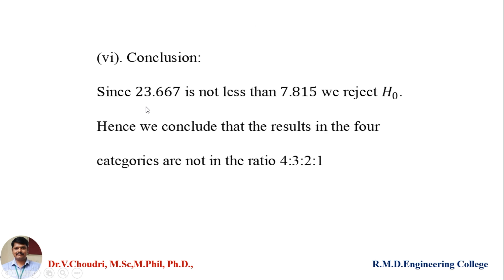The calculated value is 23.667, but the tabular value is 7.815. Our condition is that the calculated value should be less than the table value to accept H₀, but here the calculated value is greater than the table value. So we reject H₀. This means the examiner's data is not consistent — different examiners had different ratios and not all students matched the assumed ratio. Hence, we conclude that the results in the 4 categories are not in the ratio 4:3:2:1.